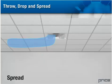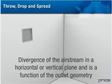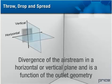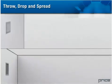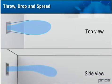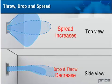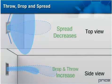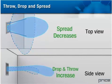Warm air is less dense and tends to rise toward the ceiling, resulting in longer throw distances and less drop. The spread of an outlet is defined as the divergence of the airstream in a horizontal or vertical plane, and is a function of the outlet geometry. As spread increases, both drop and throw decrease; conversely, as spread decreases, both drop and throw increase.